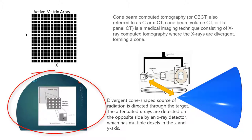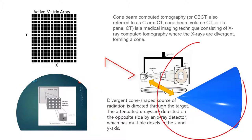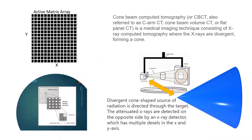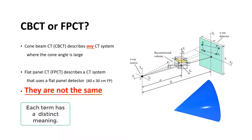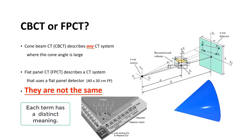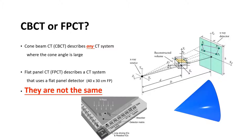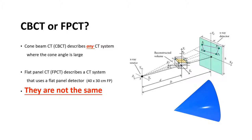The term 'cone' comes from the divergent cone-shaped source of radiation which is directed through the patient. A digital flat panel detector, comprised of an active matrix array of detector electronics, receives or absorbs the beam after it passes through the patient. Flat panel CT used with cone beam fluoroscopy describes a CT system that uses a flat panel detector.